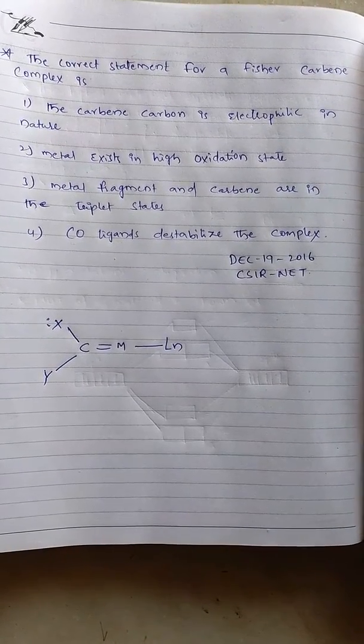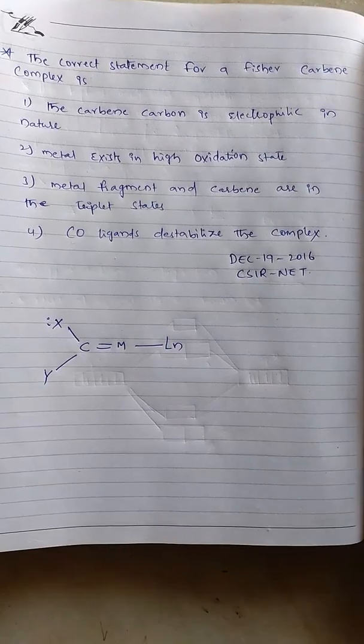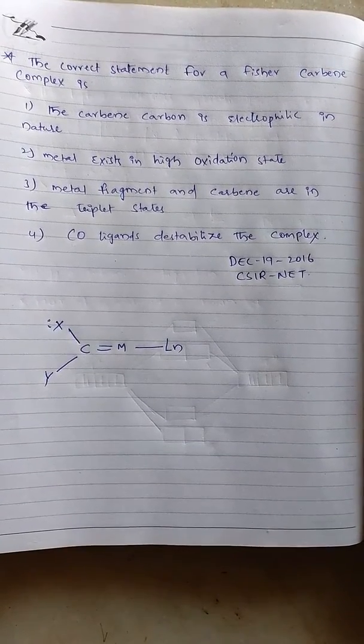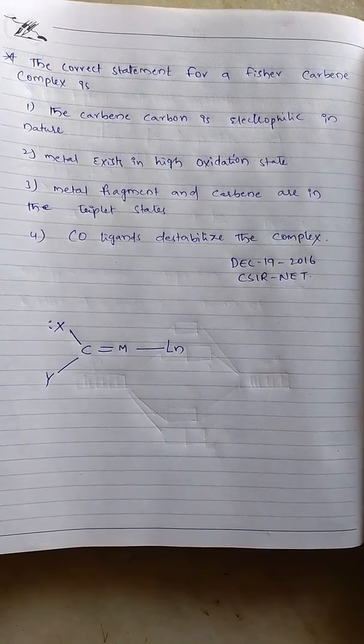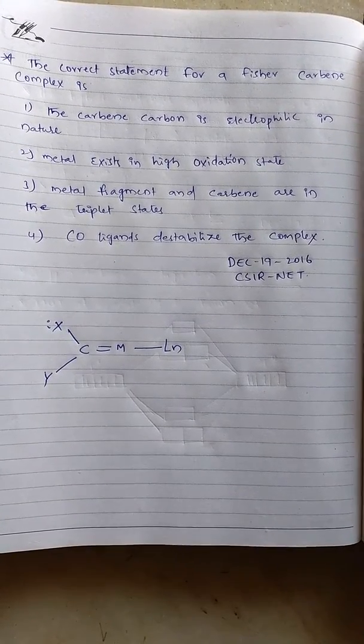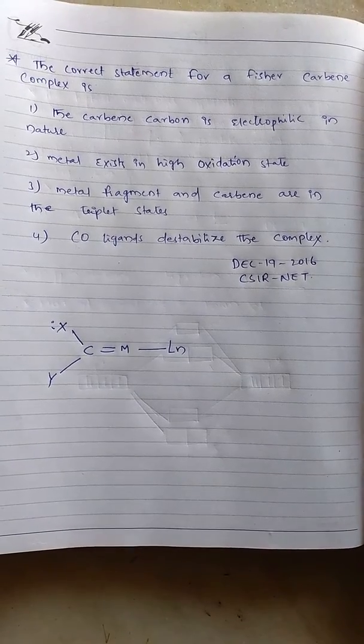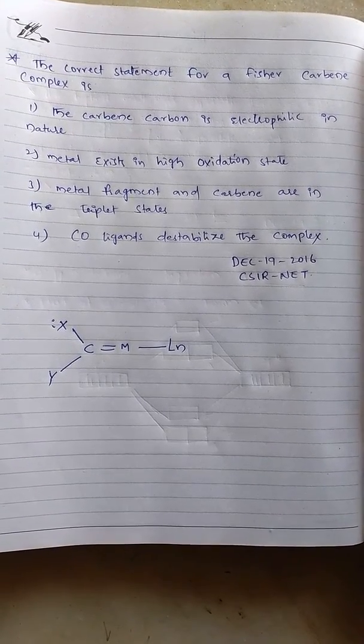Second one, metal exists in high oxidation state. Third one, metal fragment and carbine are in triplet states. And fourth one, CO ligands destabilize the complex. These are the options.